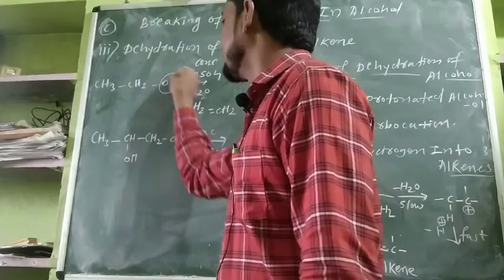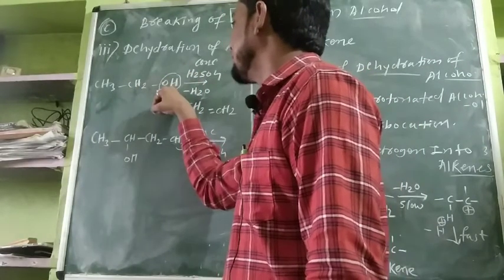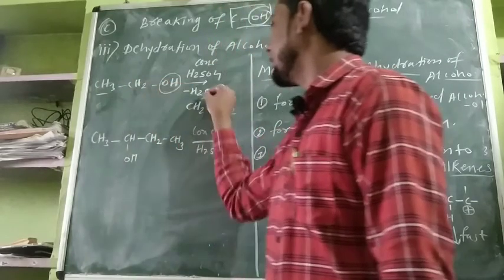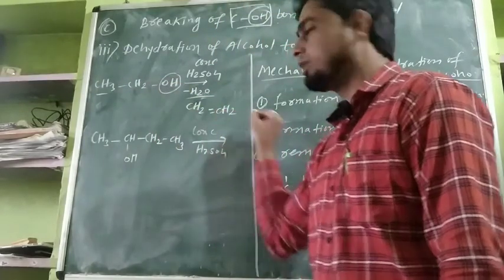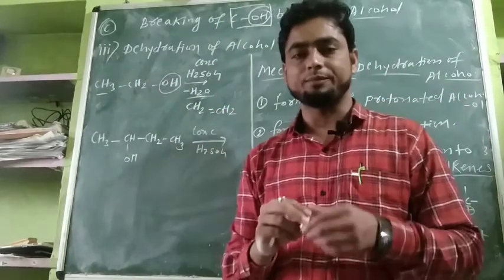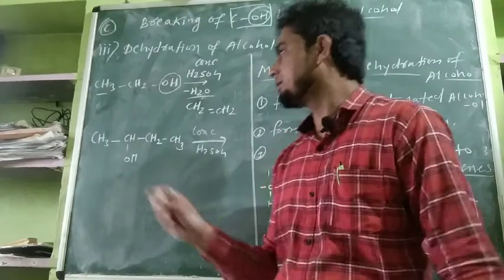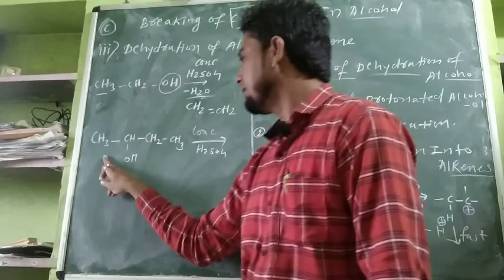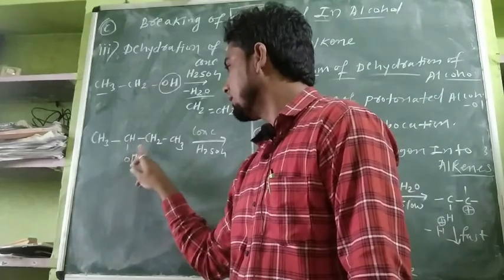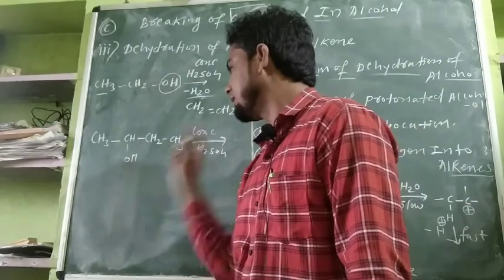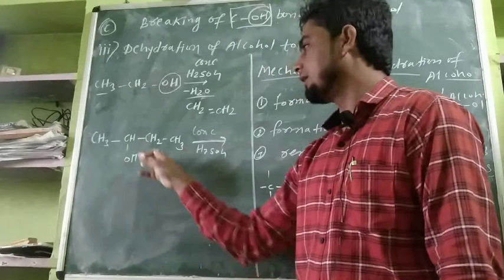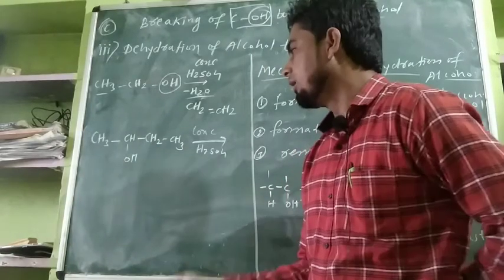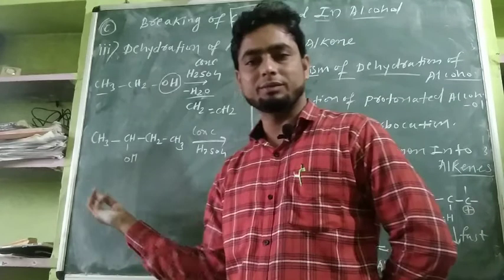So from CH3-CH2-CH2-OH, through the loss of a water molecule, we get CH2=CH2 as the alkene product. Now we take the second example of dehydration of alcohol. This compound is a secondary alcohol — CH3-CH(OH)-CH2-CH3.